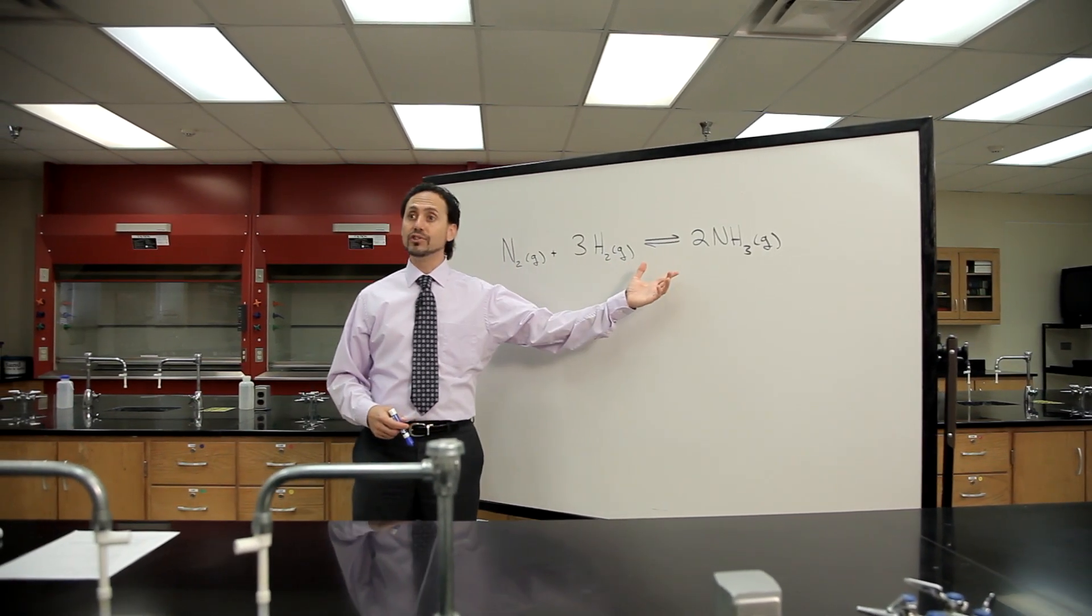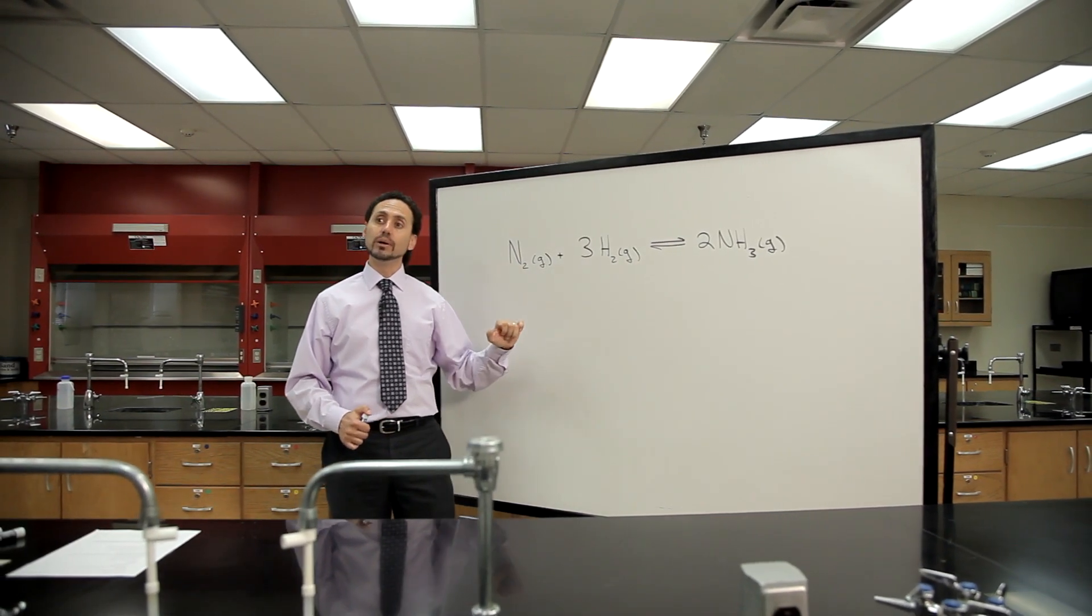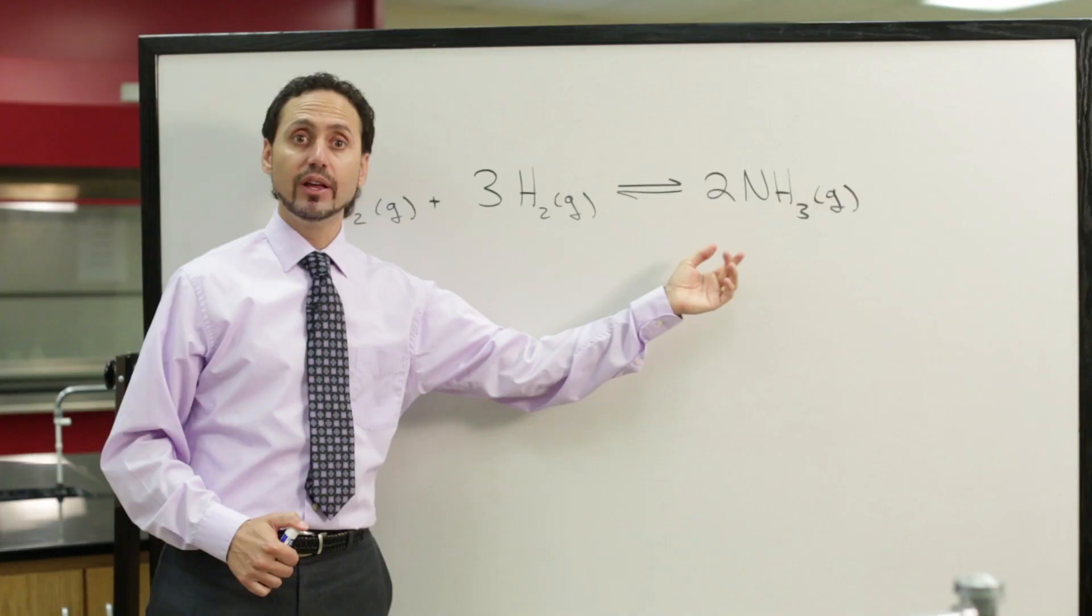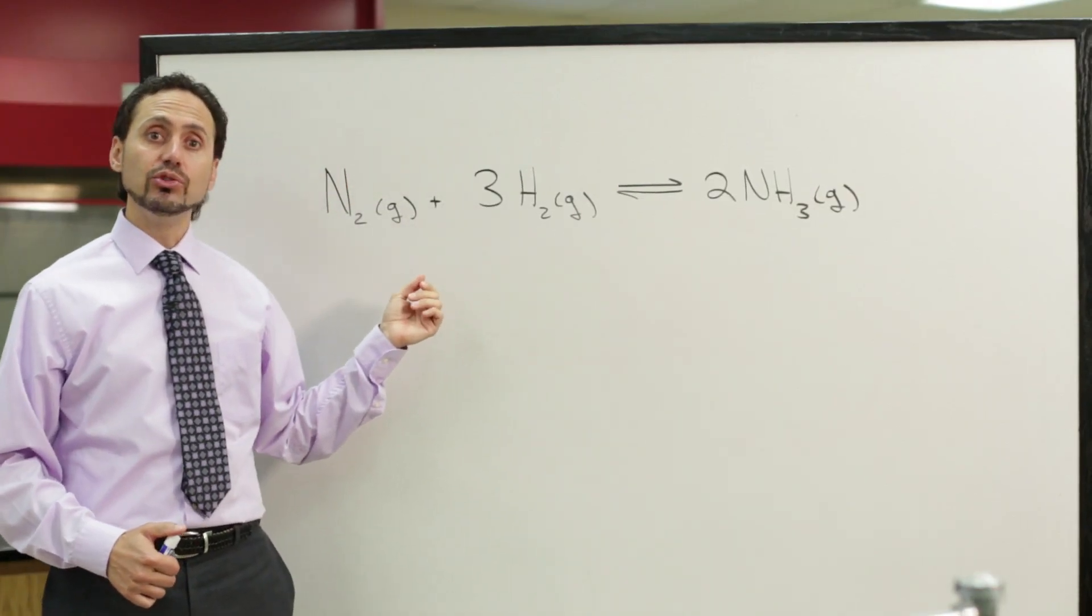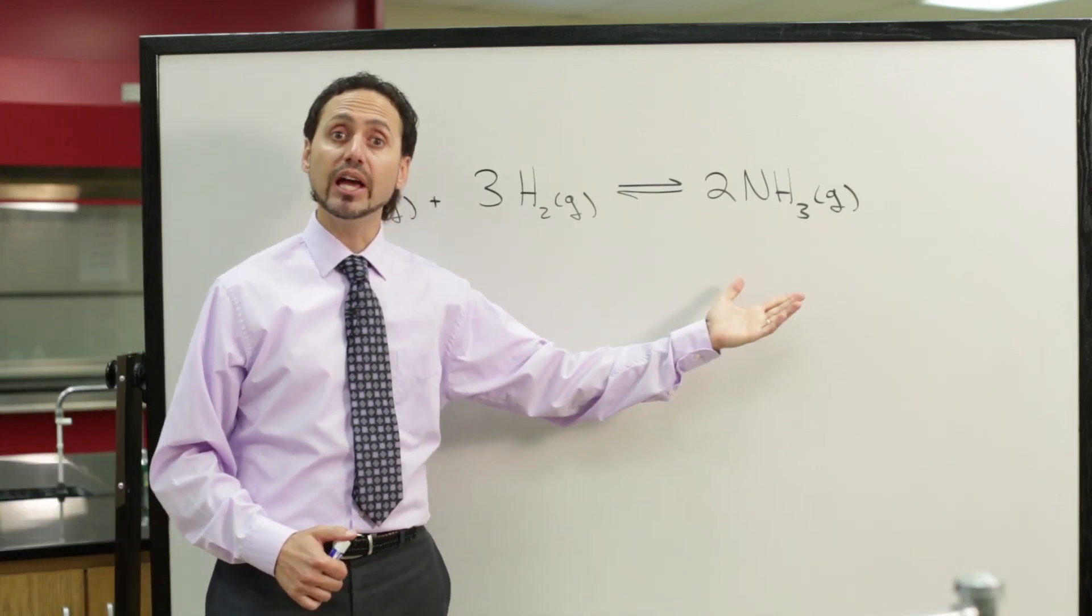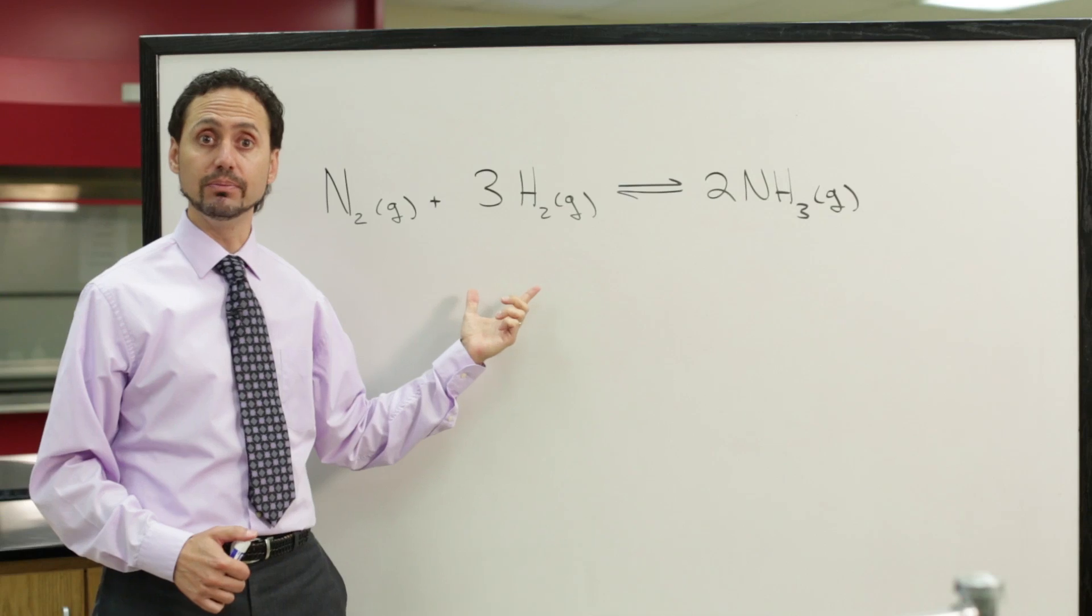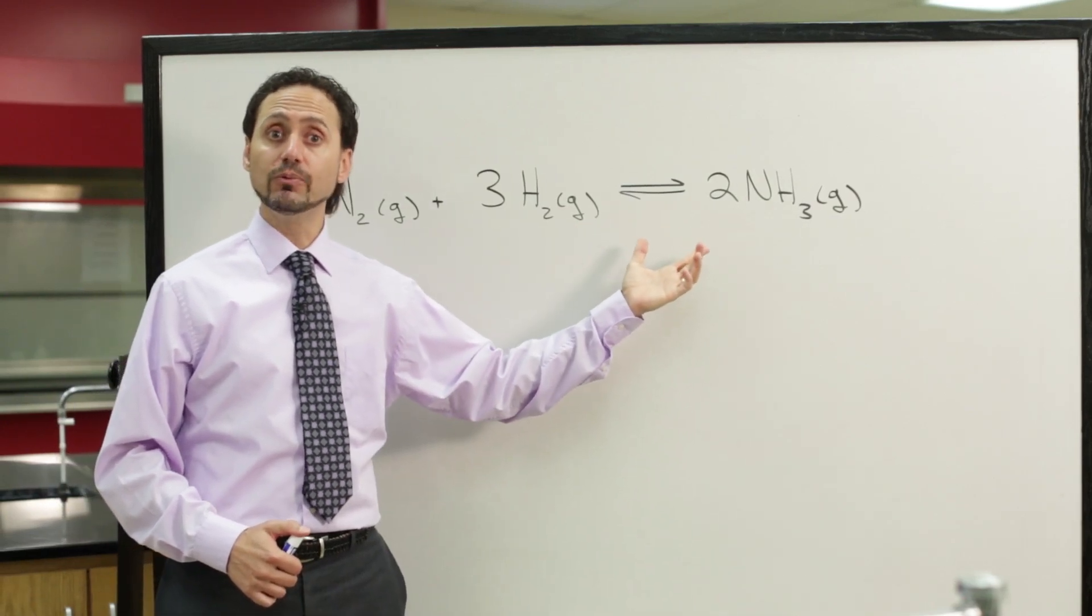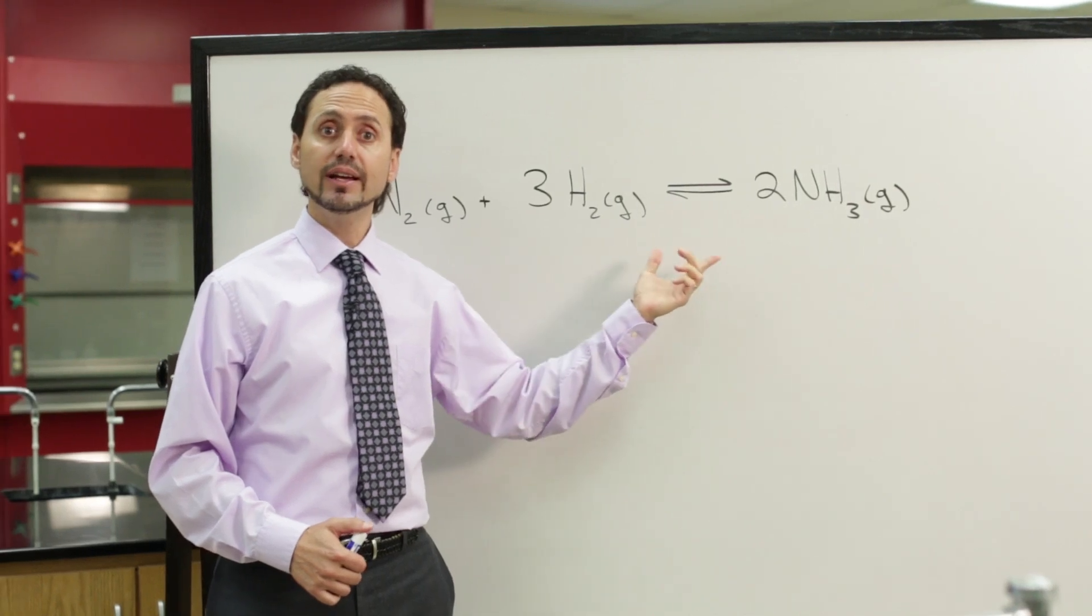So, we're back to the Haber process. You'll notice in this equilibrium that I included the physical states for all of the reactants and products. In this situation, you notice that all of the physical states are the same. This is what we call a homogeneous equilibrium, where all of the reactants and products are in the same physical state. In this case, they're all gases.